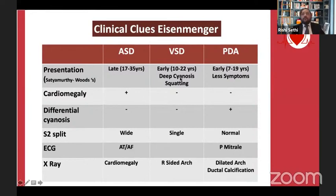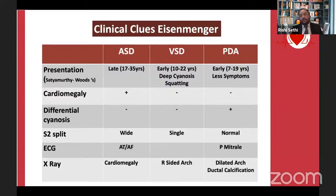History of squatting, if present, favors VSD Eisenmenger. PDA Eisenmenger is less symptomatic compared to others because the head and neck, which contains most chemoreceptors for hypoxia, receives direct blood from the LV bypassing the duct. Cardiomegaly is a hallmark of ASD Eisenmenger. Differential cyanosis is seen in PDA Eisenmenger. Wide S2 splitting is associated with ASD Eisenmenger. On ECG, ASD Eisenmenger may have atrial tachycardias and fibrillation; PDA Eisenmenger may have P-mitrale. On x-ray: cardiomegaly for ASD, right-sided aortic arch for VSD, and dilated aortic arch with ductal calcifications for PDA.